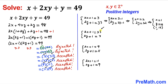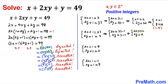Moving on to the next system of equations, we move 1 to the right hand side and get 2x equals 32 and 2y equals 2. Dividing both sides by 2, x equals 16 and y equals 1, so the solution is (16, 1).